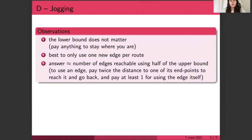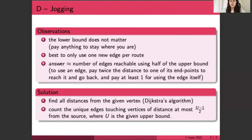To use this edge, we need to reach it and then reach home going back, and then we also need to pay at least one to use the edge. So the answer is roughly the number of edges that are reachable using half of the upper bound.